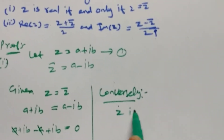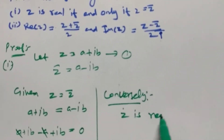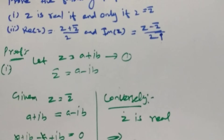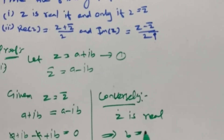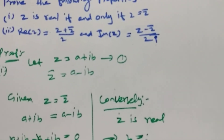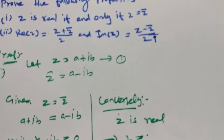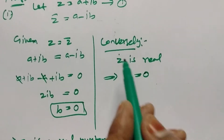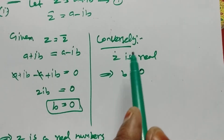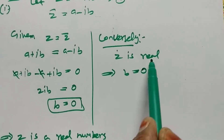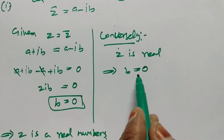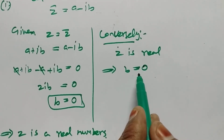Conversely, if z is real, then z is real means the imaginary part is 0, so conversely z is real, then the imaginary part is 0, so b equals 0.